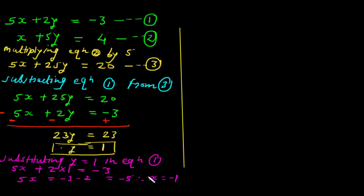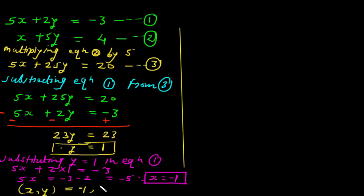Now we have the values of both variables: x equals minus 1 and y equals 1. So the solution of this equation is (x, y) equals (minus 1, 1). This is one method to solve this equation.